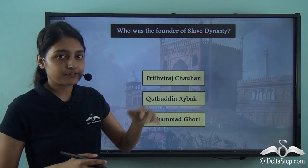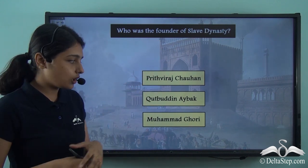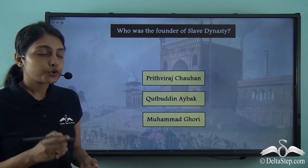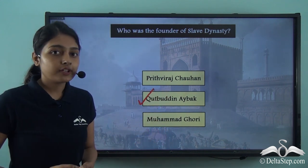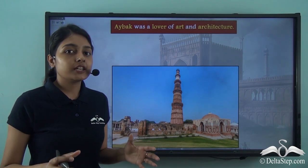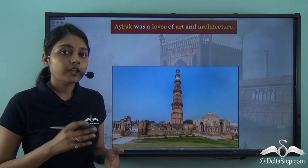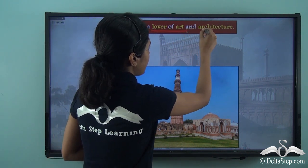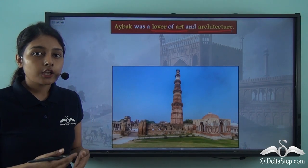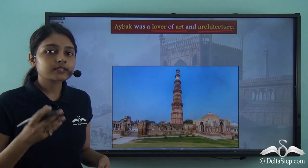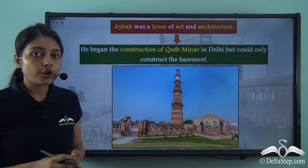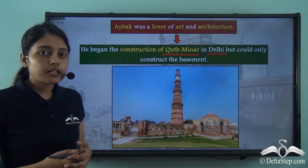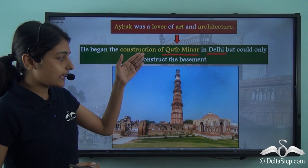Qutubuddin Aibak was the founder of the slave dynasty. He was a very generous Sultan, which earned him the title of Lakh Baksh. He was also a great lover of art and architecture, and built many monuments and towers. In fact, he started the construction of the famous monument Qutub Minar in Delhi. Unfortunately, he was not able to finish the construction — it is only the basement of this monument that he could construct.